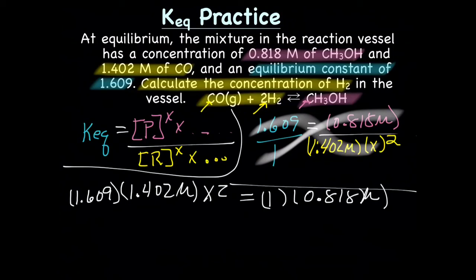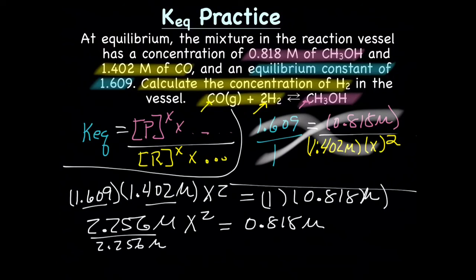Let's stick some stuff in our calculator. On the left side, I got 2.256, and that's 4 sig figs because we have 4 here, X squared. And on the right side, we're going to have 0.818. Now, to get the X by itself, we're going to divide both sides by 2.256, and that gives us 0.363, because we have 3 sig figs here.